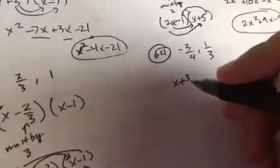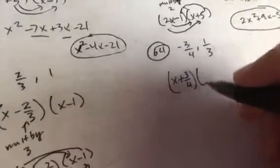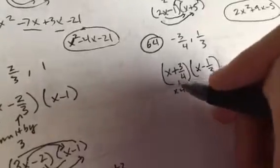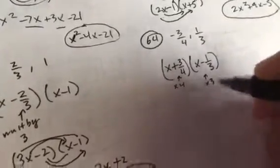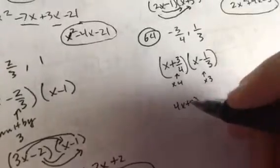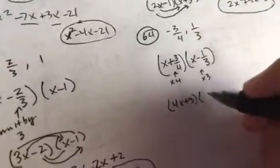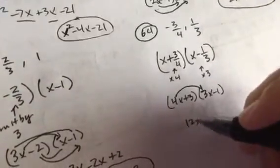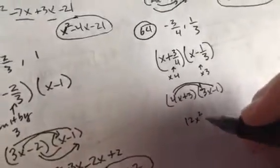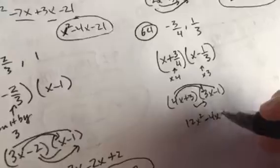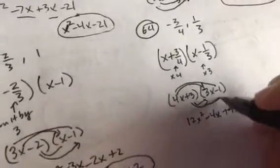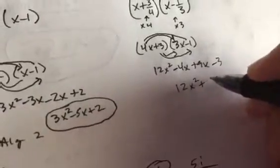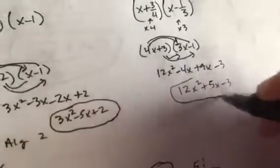Okay. So, here we're going to have X plus, kind of always the opposite there, 3 fourths in one parenthesis, X minus 1 third in the other. I'm going to multiply everything in this one by 4, everything in this one by 3. So, you're going to have 4X plus 3 in one parenthesis, then you're going to have 3X minus 1 in the other. Alright. That's going to give you 12X squared minus 4X plus 9X, lastly, minus 3. Combine those middle terms. You get 12X squared plus 5X minus 3. Alright. That's the final answer there.